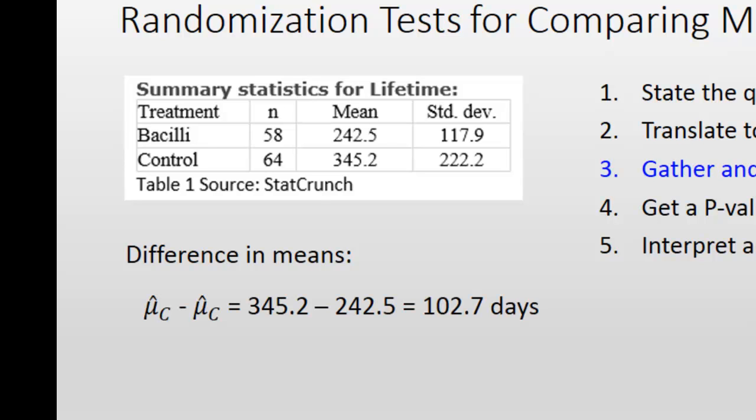An important measure here is the difference in means — this is the actual test statistic we're going to use to see whether the null hypothesis is believable. We notice a difference of nearly 103 days between the two groups. We have to find out: is a difference that large or larger something that could be expected if the null hypothesis is true? Is such a mean difference consistent with the null hypothesis given sampling variability and random variation? That's what we need a p-value for.